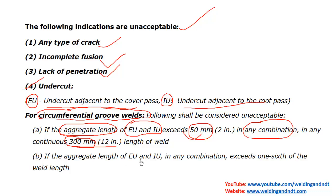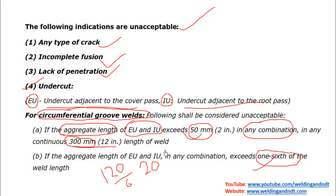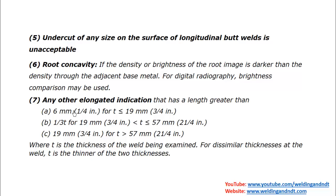If the weld length is less than 300 mm, then one-sixth of the weld length applies. For example, if the weld length is 120 mm, one-sixth of 120 mm is approximately 20 mm — so more than 20 mm aggregate undercut length would be unacceptable. This undercut criteria applies to circumferential groove welds only. For longitudinal butt welds, any type of undercut is unacceptable — there should be no undercut at all.